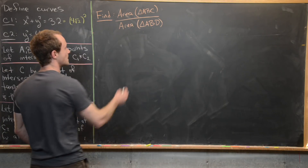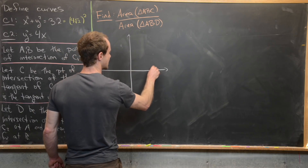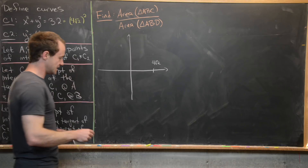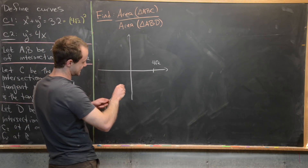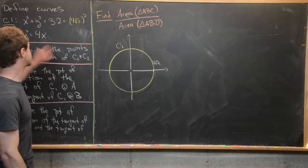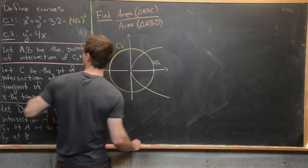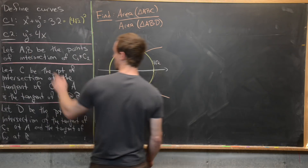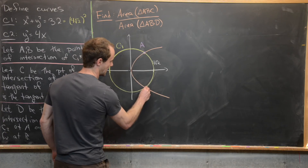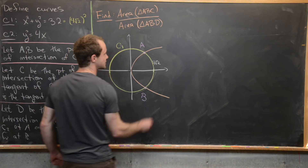Let's get a picture going. I'll draw the coordinate plane and mark the radius 4 times the square root of 2. Using a string trick, I can draw a perfect circle with that radius — that's C1. Now I'll sketch in the rightward-opening parabola y squared equals 4x — that's C2. We defined A and B to be the points of intersection of C1 and C2, so I'll mark point A up top and point B down below. Now let's solve for their coordinates.